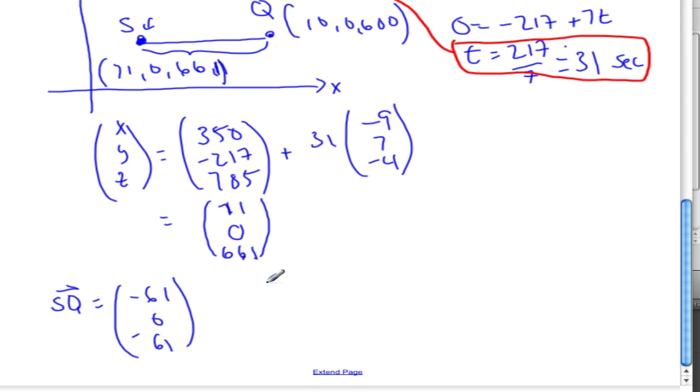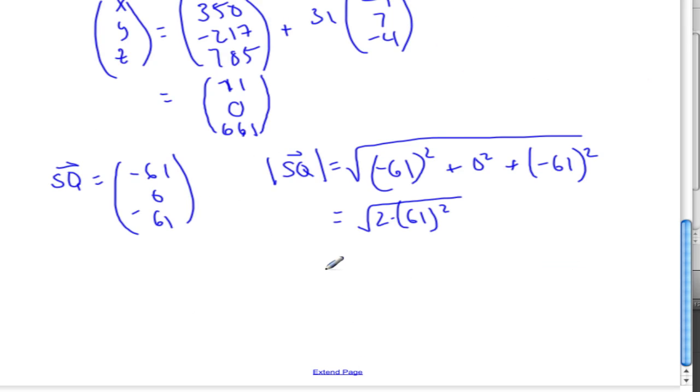The distance is the magnitude of that vector, which is the square root of (-61)² + 0² + (-61)², which is 2(61²) square rooted, which is 61√2 meters.